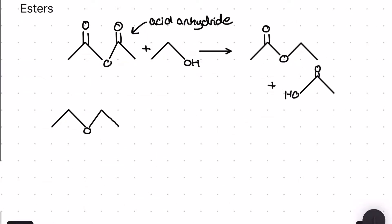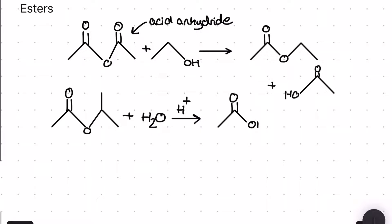Now it's time to start reacting these esters. For the first reaction I'm going to do an acid hydrolysis: reacting an ester with water in the presence of an acid catalyst to produce a carboxylic acid and some alcohol. The ester used here is methyl ethanoate, and if you'd like more complicated ester naming practice check out the link in the video description.